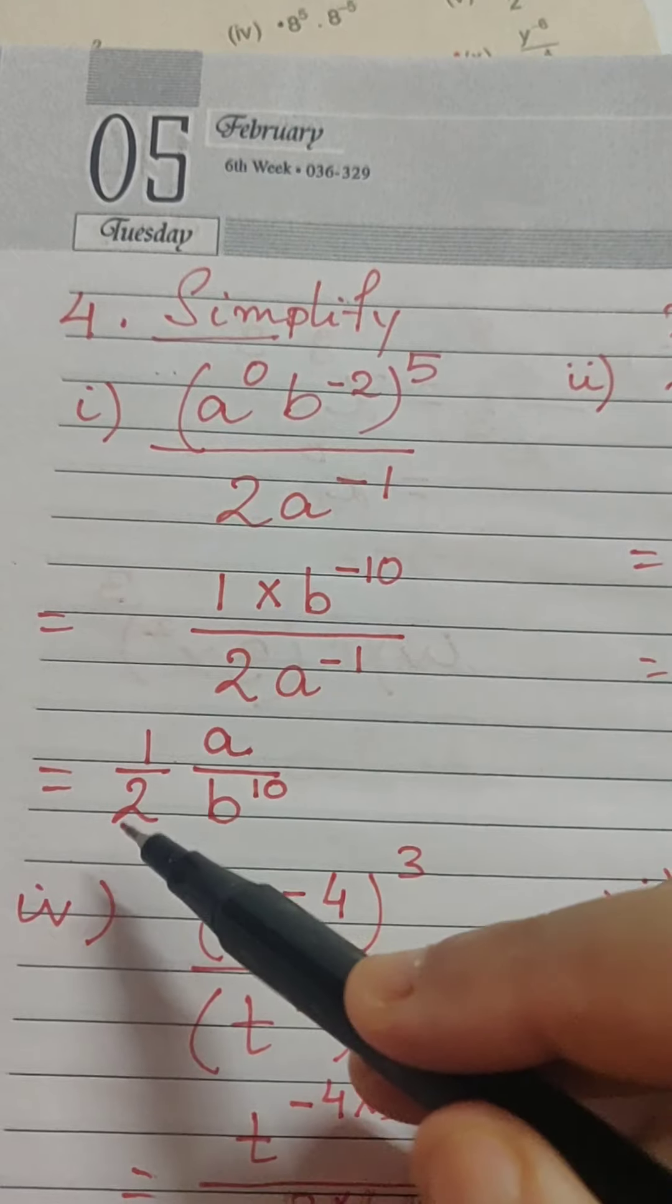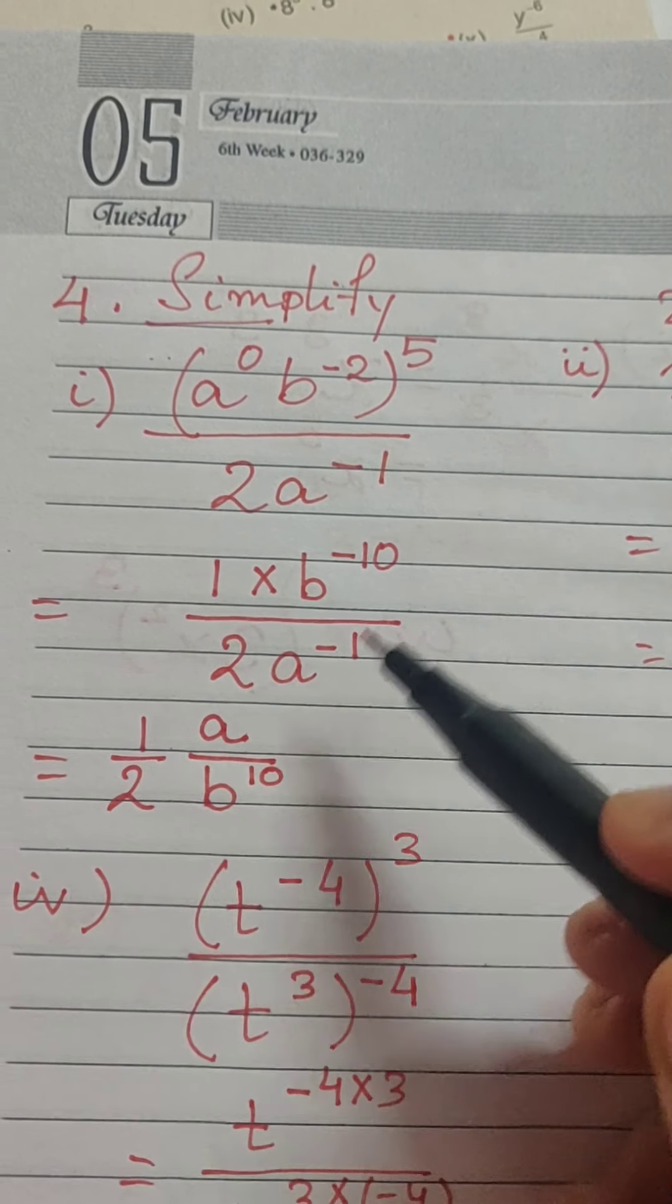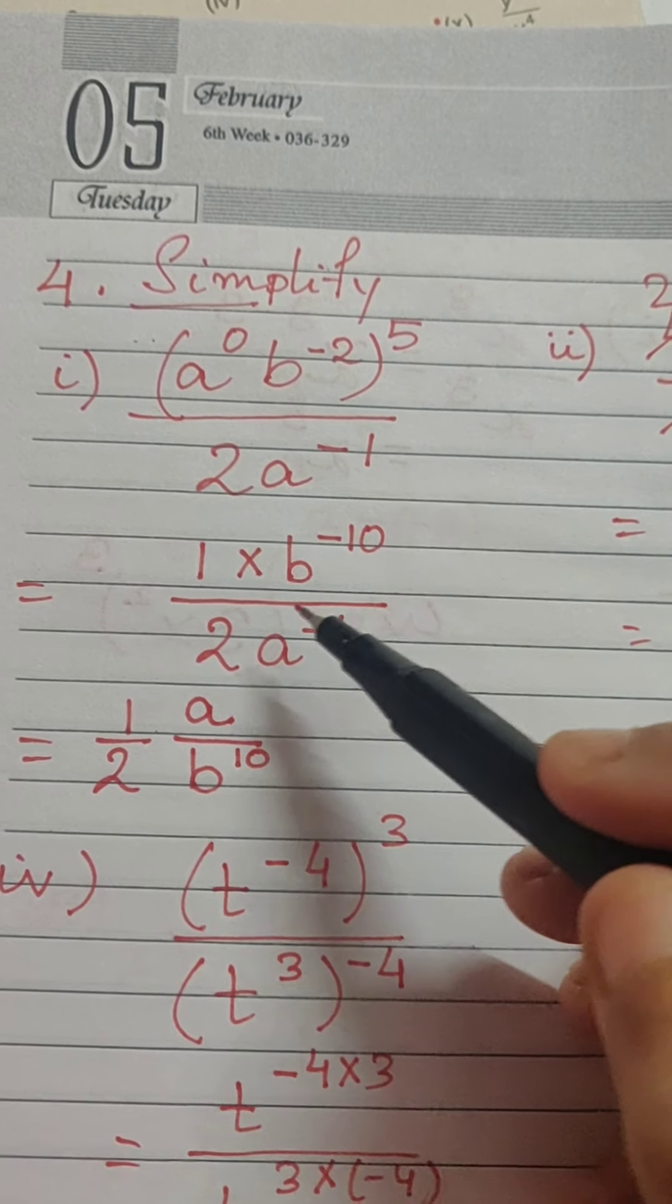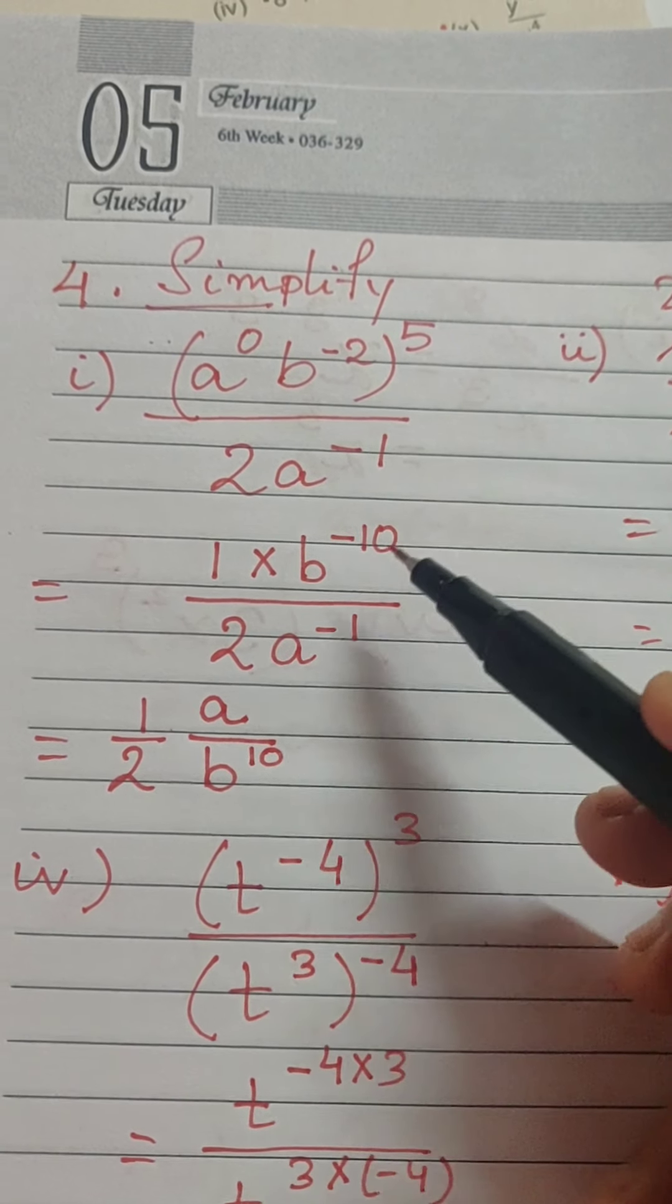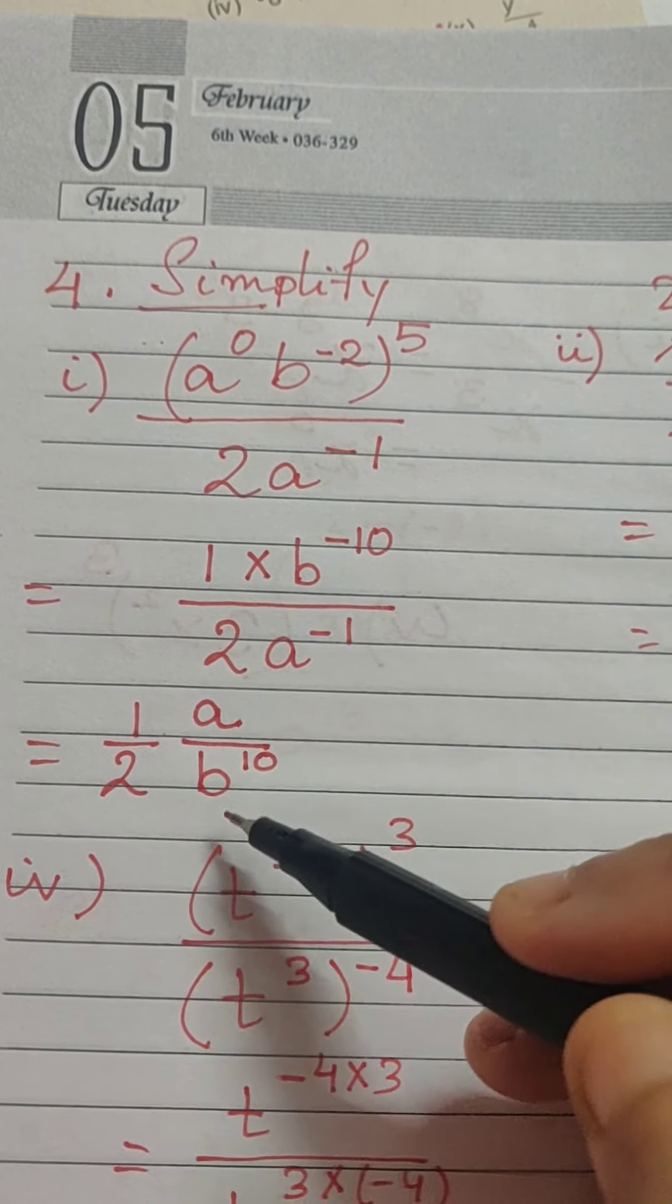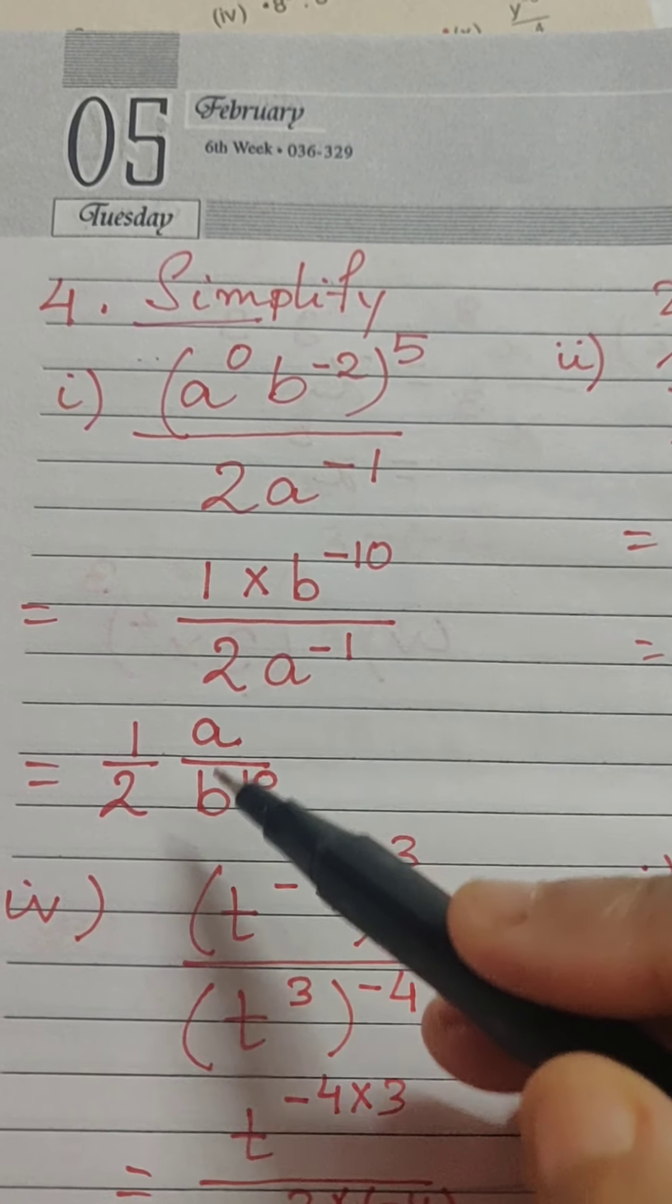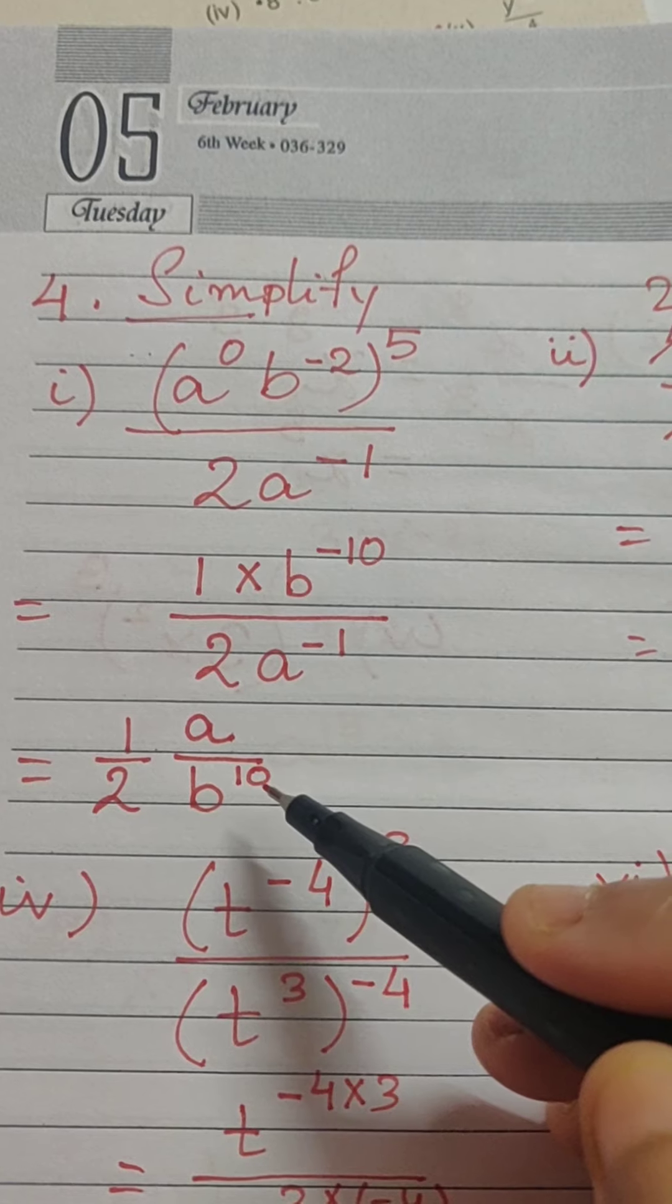Now, let us keep the number section separate 1 by 2 and the variable section both have negative exponents. So, if we reciprocate them the exponents become positive and our work is done. So, 1 by 2 upon reciprocating we get a by b to the power 10.